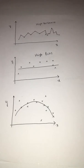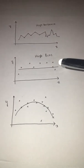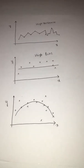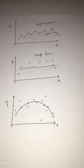Coming to the second case, where you have high bias — even though the model is not fit to the training dataset and has not followed all the points clearly, accuracy is very bad. This is not what we want. Think of it as levers.